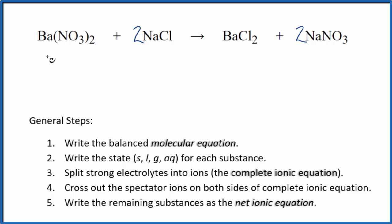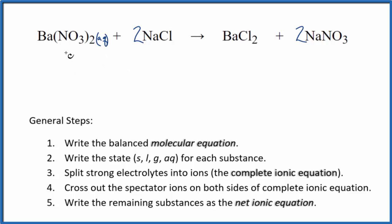So if we look at the states for each substance — barium nitrate, if you know your solubility rules, nitrates are very soluble. I'm going to write aqueous because they're soluble; they'll dissolve in water and dissociate into their ions. NaCl compounds with sodium and chlorine are both soluble compounds usually.